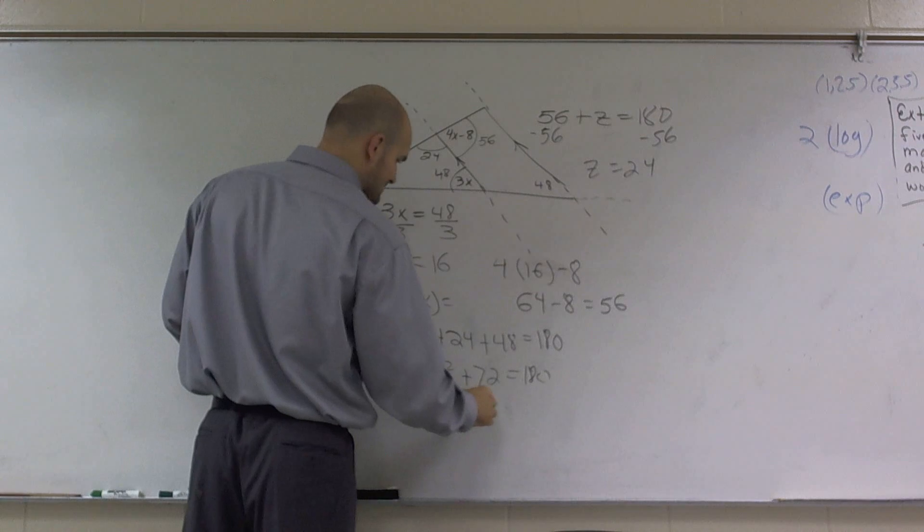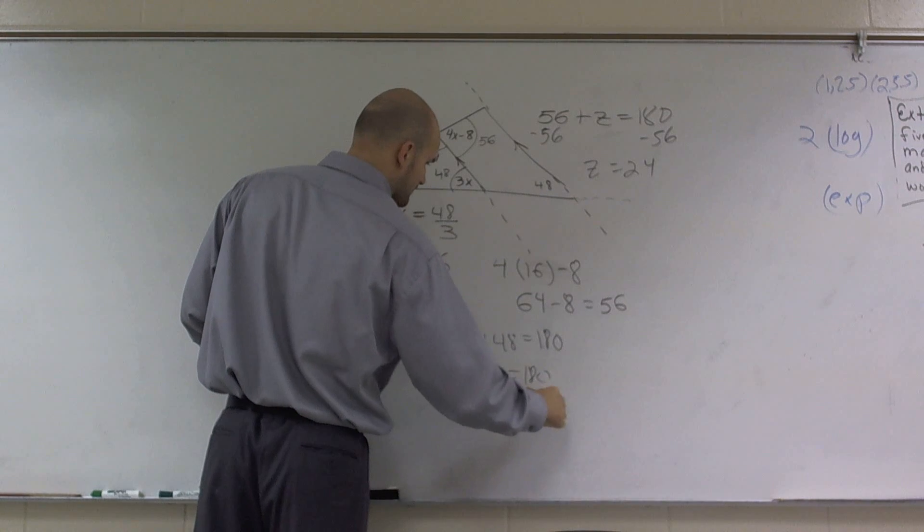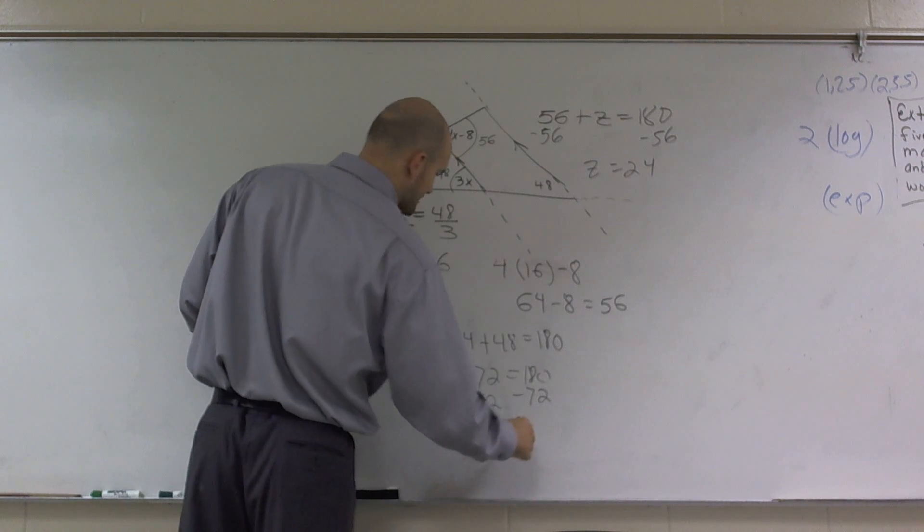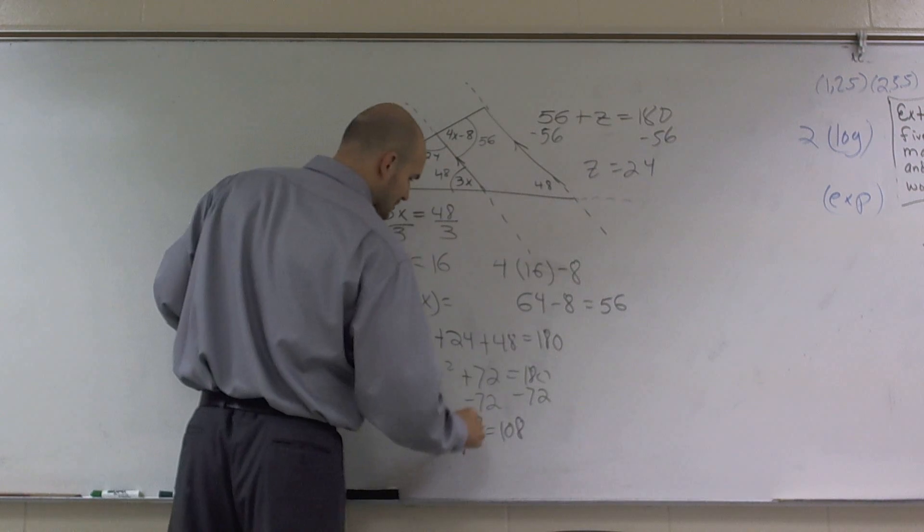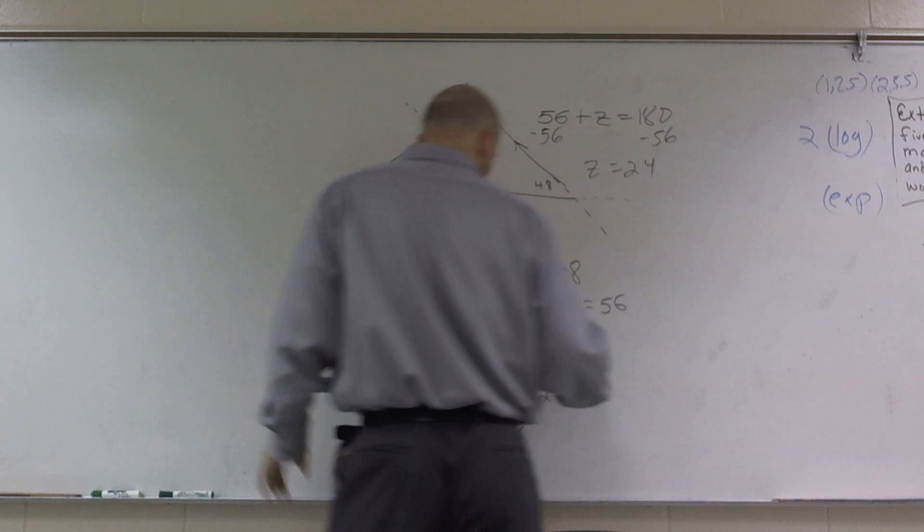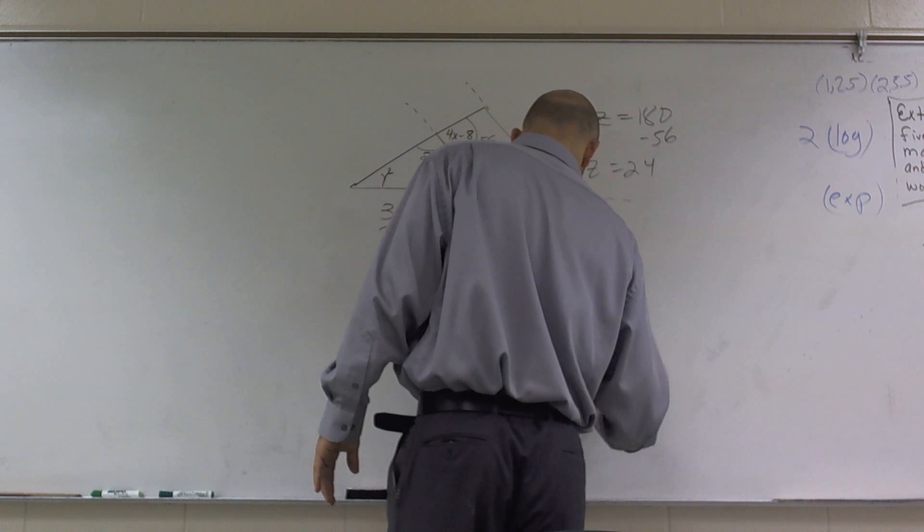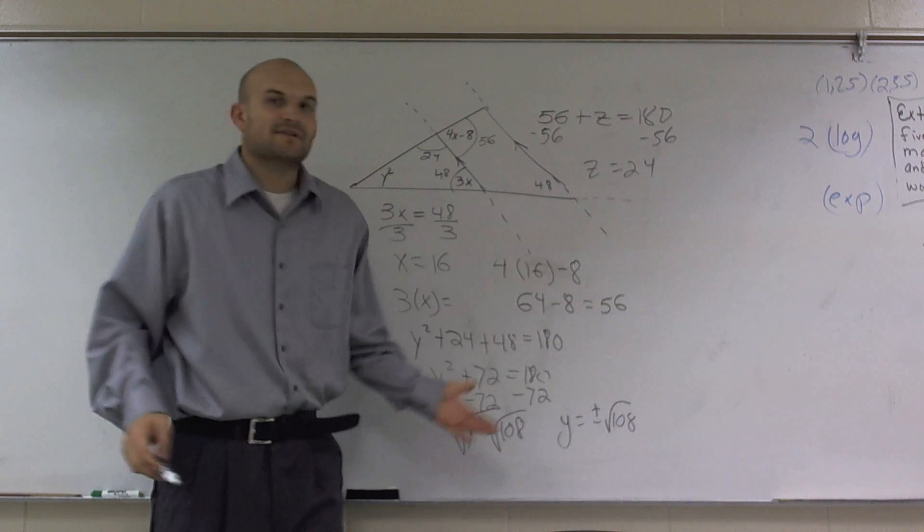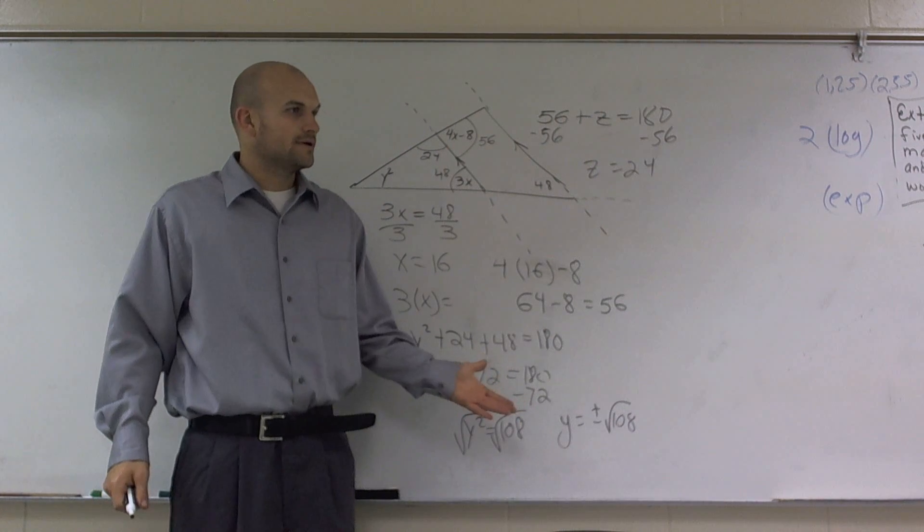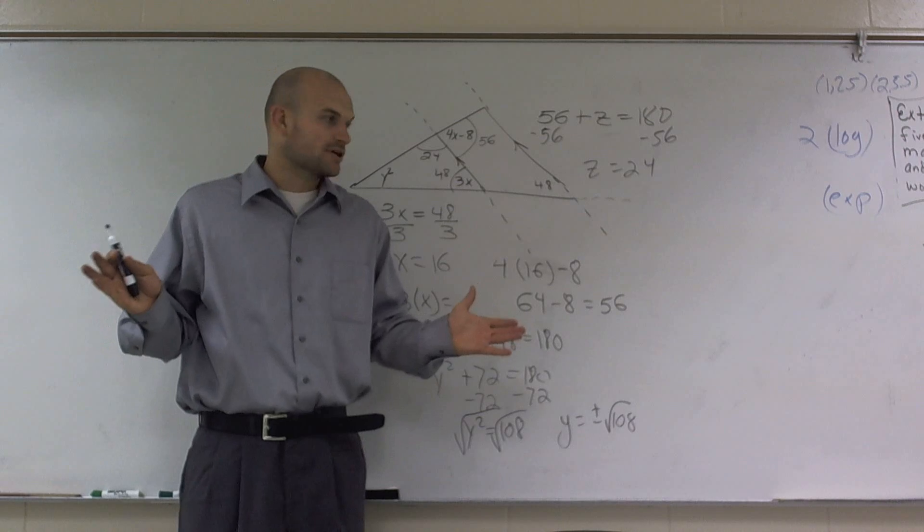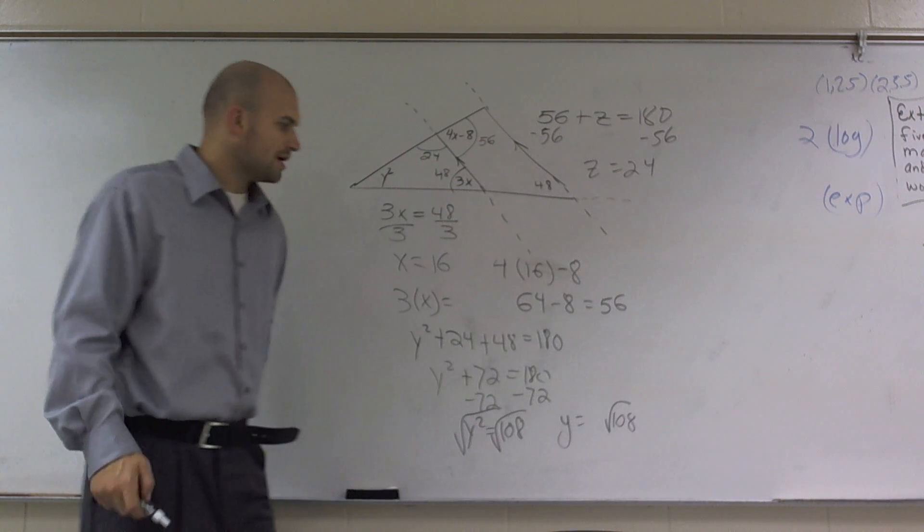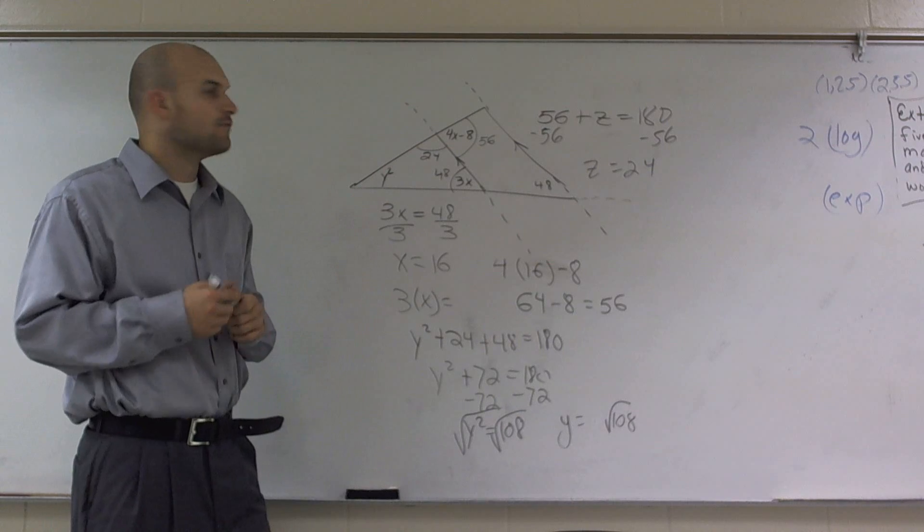So now I'll subtract 72, and you get y squared equals 108. Then I take the square root, and what I get is y is equal to plus or minus the square root of 108. Now obviously you can't have a negative degree, right? Because degree is a measure. Measures are going to be positive. So therefore, it's just going to be the positive square root of 108 will be the value of y.